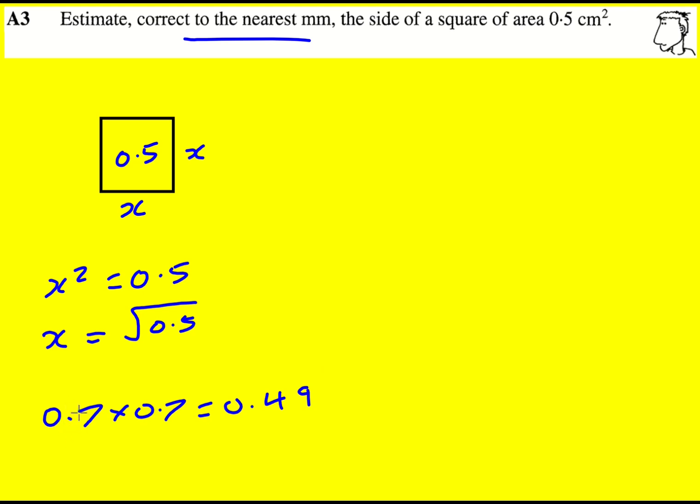One way of doing this is to say, right, this is roughly 7 times 7, but I'm going to need to divide by 10 and divide by 10 again. So divide by 100. And then you can see we get the answer 49 divided by 100.